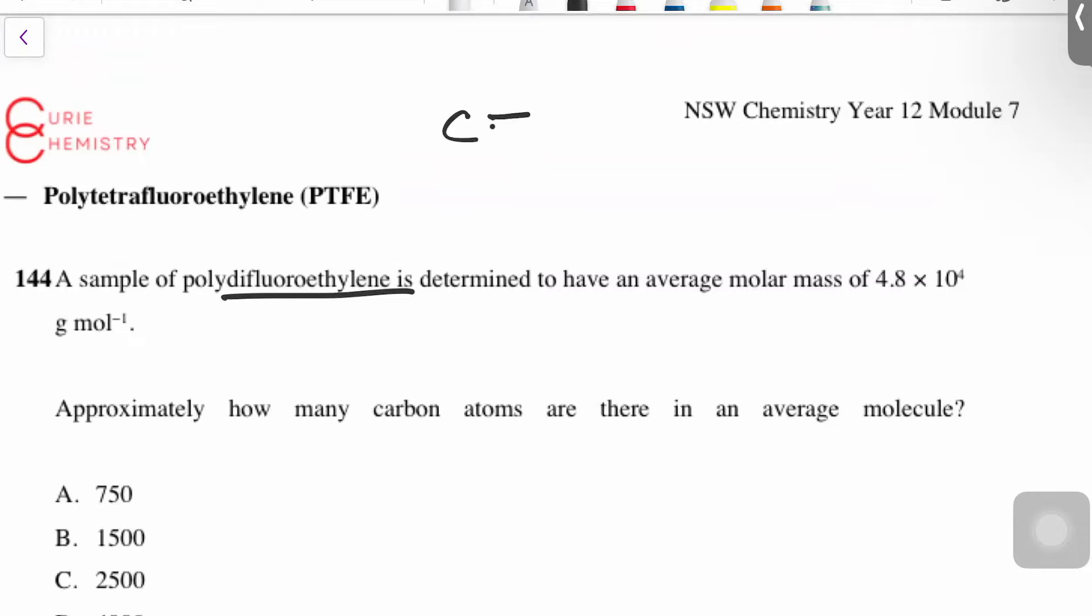So difluoroethylene is two carbon atoms with a double bond in the middle, and then there's a fluorine. In this case, they don't actually tell you that the fluorine is on either carbon.